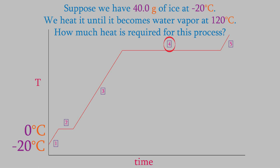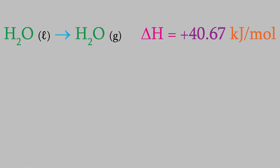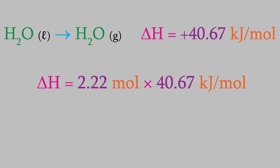For the fourth step, we're converting the water into water vapor. Just like step two, this is a reaction that has an enthalpy. In this case, 40.67 kilojoules per mole. We already calculated that we have 2.22 moles of water, so we'll use that and find out that this step has an enthalpy of 90.29 kilojoules.